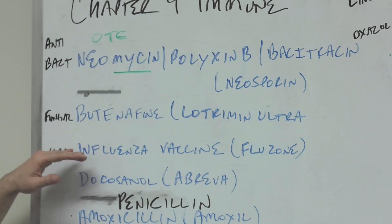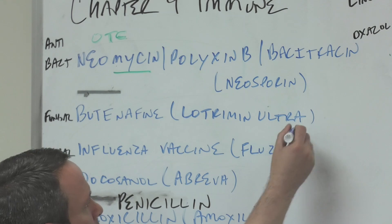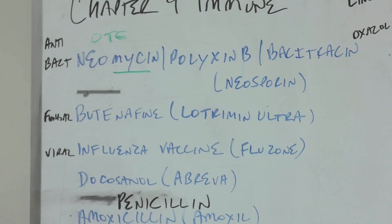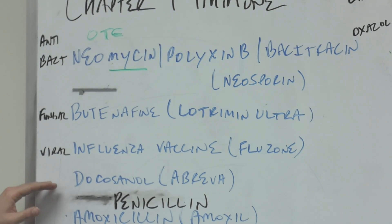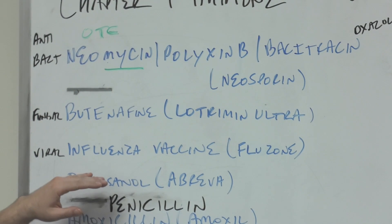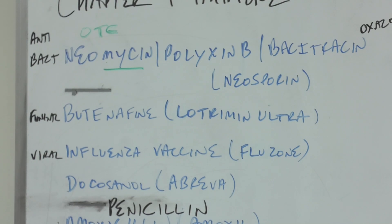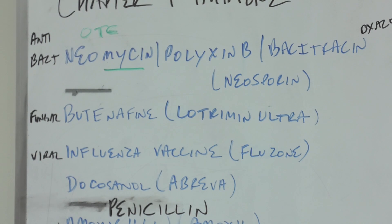The antifungal over-the-counter—you might know Lotrimin Ultra, we use for athlete's foot—it's butenafine. Then influenza vaccine. Again, using the prophylactic, something that's trying to prevent infection before we use something acute, docosanol.